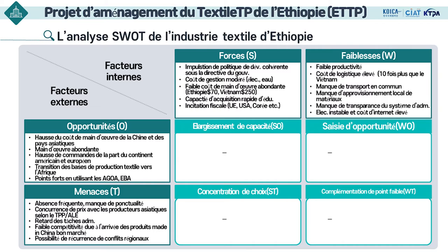Voici l'analyse SWOT de l'industrie textile de l'Éthiopie. Comme force, le gouvernement prend l'initiative de mettre en œuvre une politique de développement cohérente et la vitesse de mise en œuvre est donc rapide. Les infrastructures de base comme l'électricité et l'eau sont bon marché et les salaires sont encore bas — le salaire moyen en Éthiopie est environ 70 dollars, contre plus de 250 dollars au Vietnam. La population parle très bien l'anglais et il existe de nombreuses exonérations fiscales.